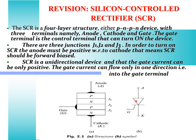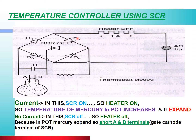Now we look at the operation — on or off — this is the control. We use this for the temperature controller using SCR. There is a heater, and its on/off is controlled automatically with the help of SCR. A glass tube filled with mercury is used as the sensing element. The key property of mercury to remember here is its thermal expansion property.